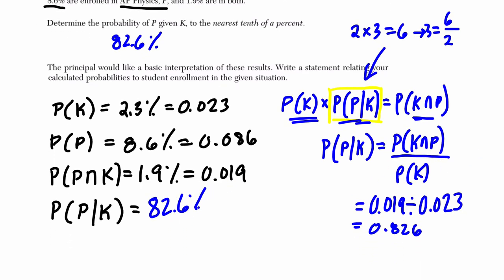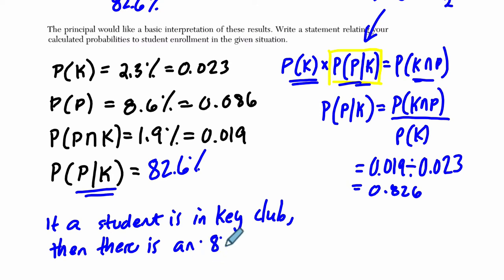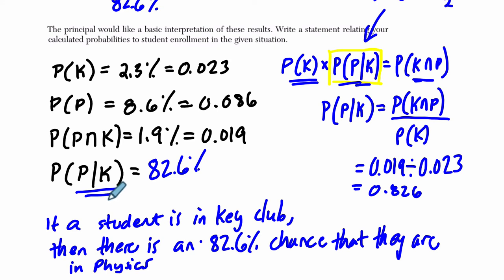Well, the way I like to phrase this, I keep it as simple as possible. Use the context. The given is that they are in Key Club. So if a student is in Key Club, that's the given part. Then, there is an 82.6% chance that they are in physics. In other words, you know they're in Key Club. Once you know that, how likely is it that they are in physics? And that's different than just the probability of them being in physics. So it matters. Being in Key Club might be an indicator that you're also in physics. And you could elaborate on that, but keep it simple. Especially if you're answering a regent's question. Just tell them what they need to know, which is that you understand how to read this probability.